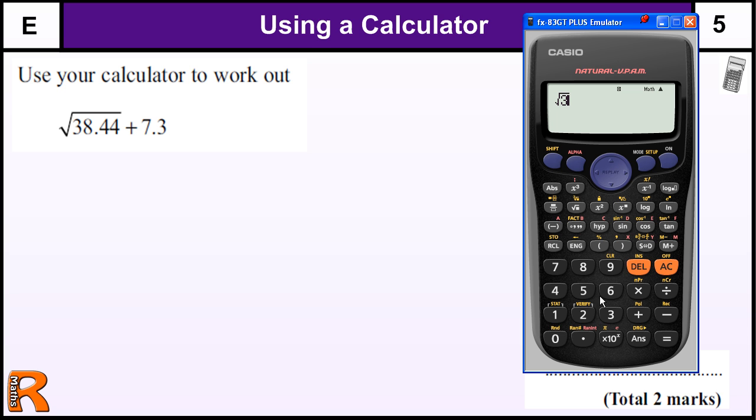We've got the square root of 38.44, and be careful because if I put plus 7.3, that does not look the same as the problem because the square root stops there. That's cutting off the square root, that's not the same.